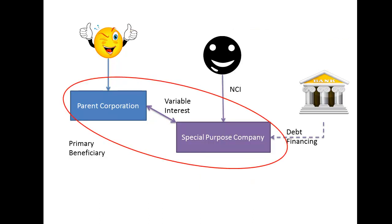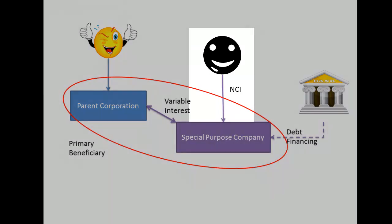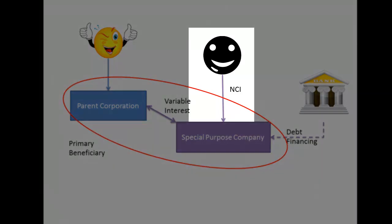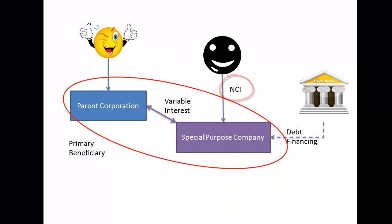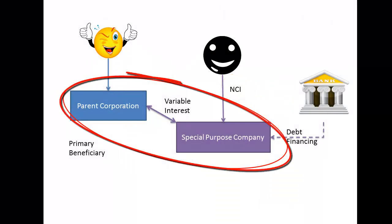When the parent corporation goes to consolidate the special purpose company, the so-called equity interest in the special purpose company gets reclassified as non-controlling interest in the consolidated financial statements. The bubble now includes the special purpose company, so all intercompany transactions get eliminated in the same way as we have previously learned.